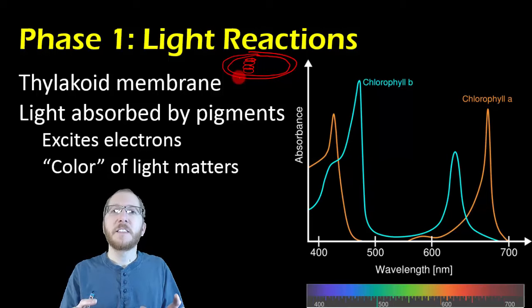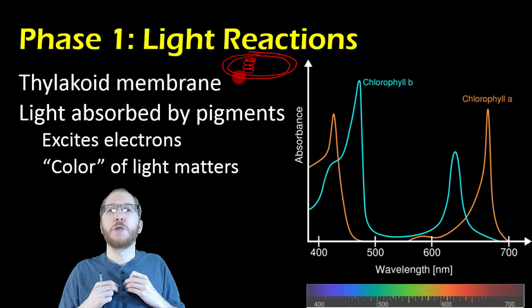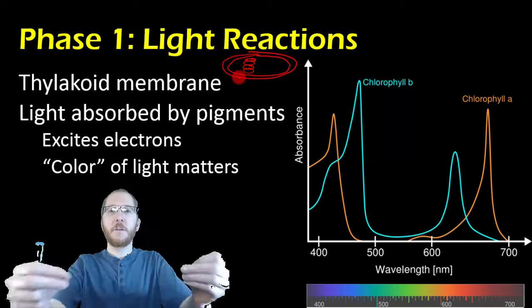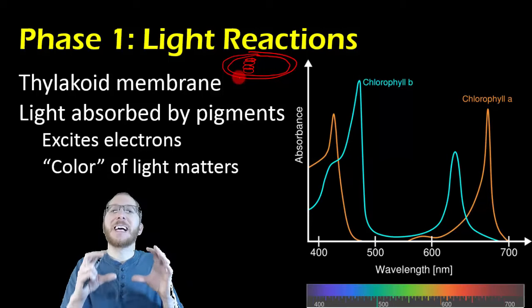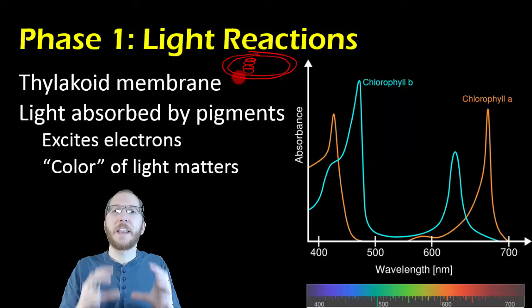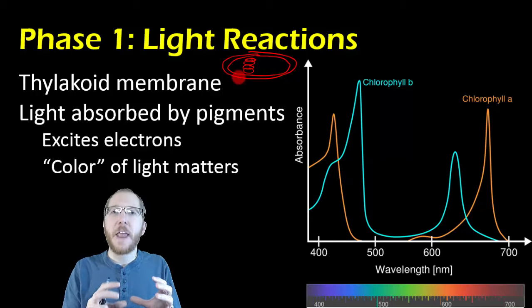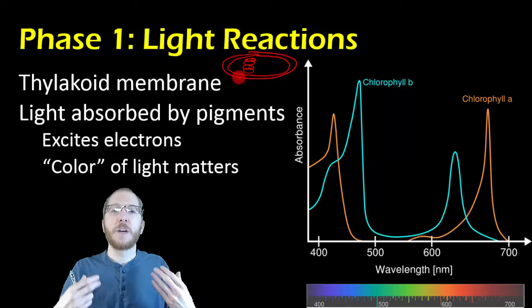So these pigments, if they're hit by the right photon of light, the right wavelength or color of light, they can absorb it. And what happens when they absorb it is one of their electrons will jump up, it'll jump away from the nucleus, and that means it has more energy, it has stored energy. We can then use that energy to power the rest of the light reactions.